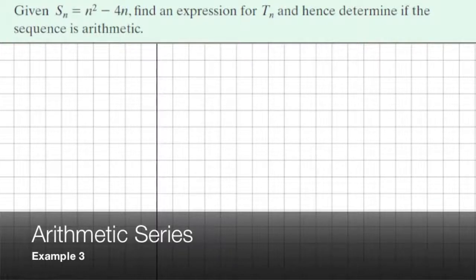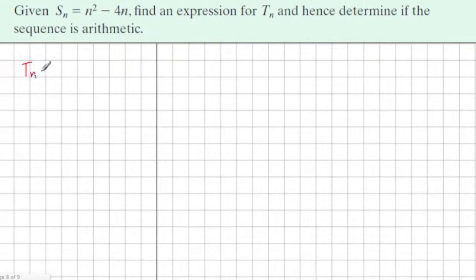Given that the sum to n is equal to n squared minus 4n, find an expression for term n. So term n equals what? And hence determine if it's arithmetic.